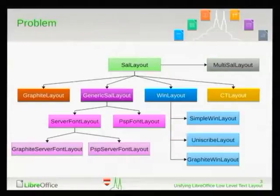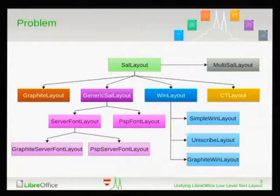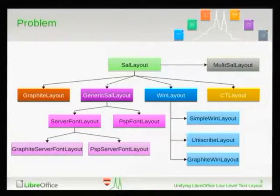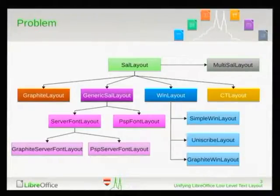Generic SalLayout is only on Unix. And we have server font layout — we don't do server fonts for several decades or something. And we have PSP for PostScript printing, and also PSP server layout for PostScript printing. And we have graphite server font layout for graphite fonts on Unix as well. So about five classes on Unix just to do text layout.